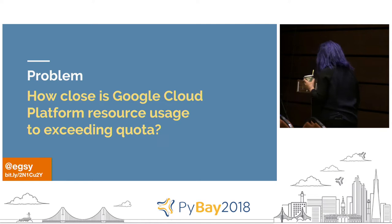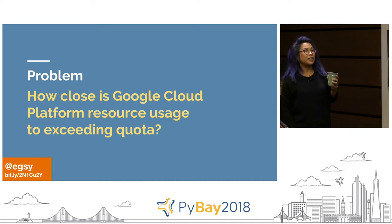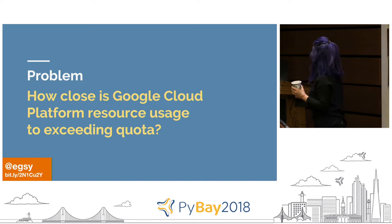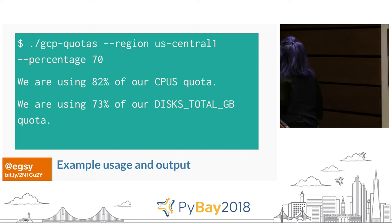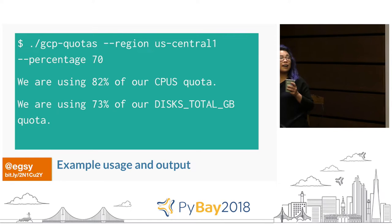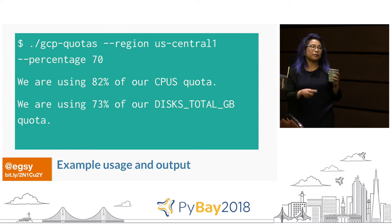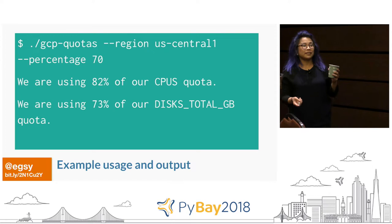The problem was: how close is our Google Cloud Platform resource usage to exceeding quota? After I got my developer environment set up on February 26th, this was the first assignment given to me. The example usage and output from the Jira ticket shows you pass arguments to a script giving the region, and then you get an output as a sentence showing the percentage — so you have to massage the data to get that percentage.